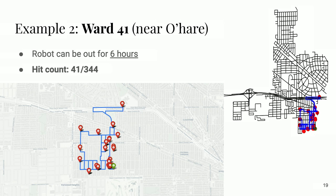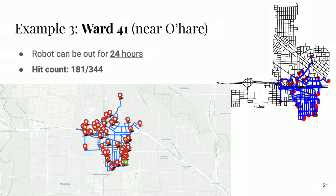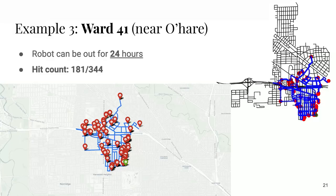You're routing 41 potholes and nobody's involved and nobody has to actually do anything. We can discuss details of the algorithm in the longer talk. If we have round-the-clock autonomous pothole filling — running the same ward for 24 hours — we can fill 181 potholes in those 24 hours, where the red markers are potholes and the green is the start and stop location. Depending on the potholes and traffic, it could be a little lower or higher, but that's the gist of it.